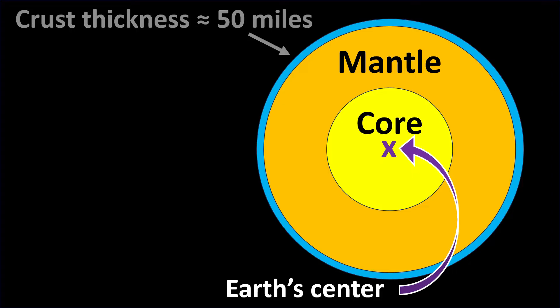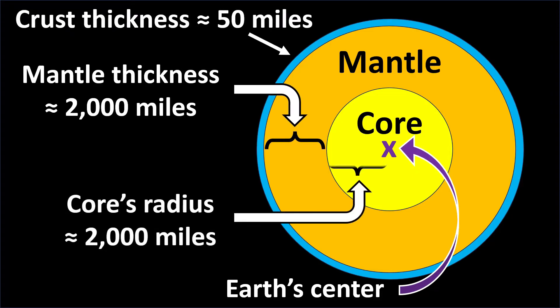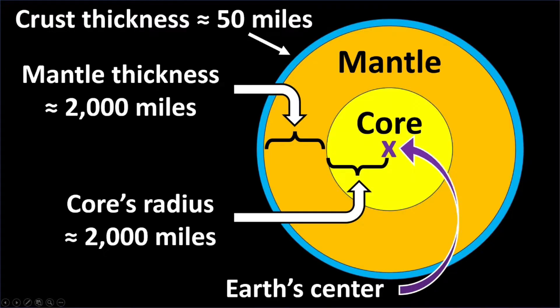The crust is about 50 miles thick, and the mantle is about 2,000 miles thick. Since the core is the center, we will describe its size as thickness, but we instead say it has a radius of about 2,000 miles, which we can think of as being the same as its thickness.